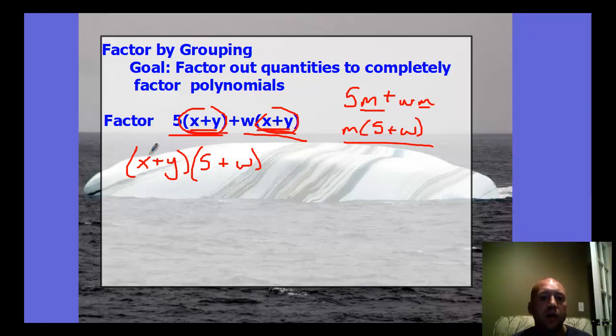but they only see one when they factor it out. Well, if we distribute this, this whole quantity has to get distributed to both the 5 and the W, so there still really are two of these quantities we multiply through. The first part of factoring by grouping is realizing that you can factor out a group if the terms have the same group.